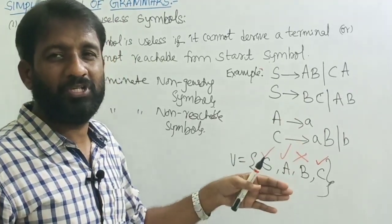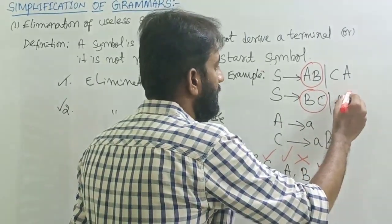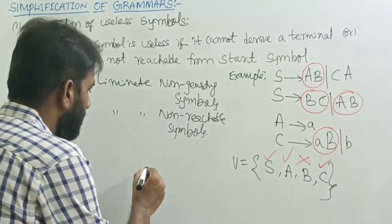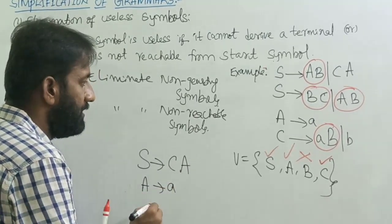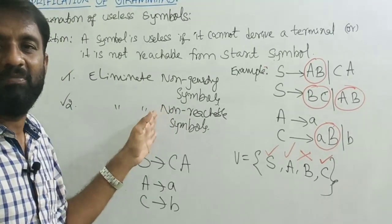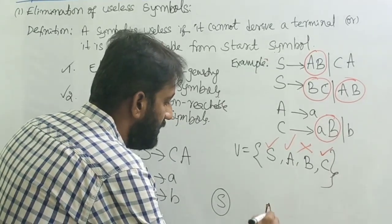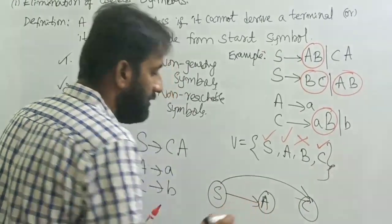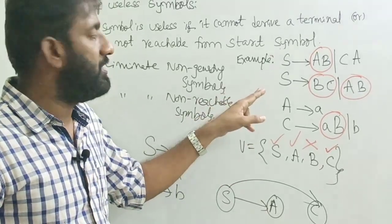Remove the variable B and its associated productions from the grammar. After removing B, the grammar becomes: S → CA, A → a, C → b. Now check if all remaining symbols are reachable from the starting symbol using the second step. Write the variables: S, A, C. From S → CA, C is reachable and A is also reachable. So there are no non-reachable variables.